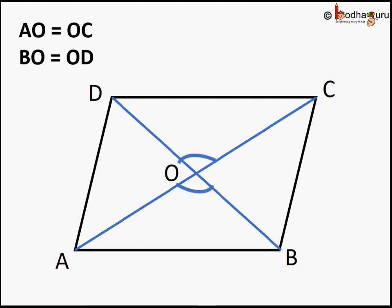And angle BOA is equal to angle COD as they are vertically opposite angles, hence equal. So triangle ABO is congruent to triangle DOC following the SAS rule.